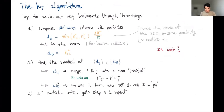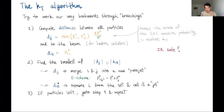For the hadron collider environment, energy is replaced by transverse momentum p_T and angles become ΔR. An additional parameter, capital R, is introduced as a cone resolution parameter for the jet definition — something you set yourself. This mimics the inverse of the soft-collinear emission probability.